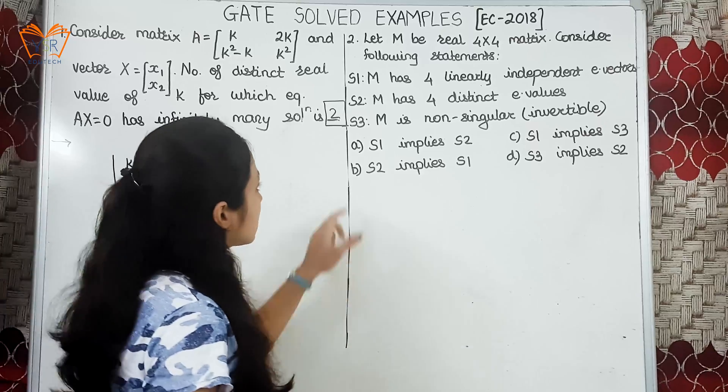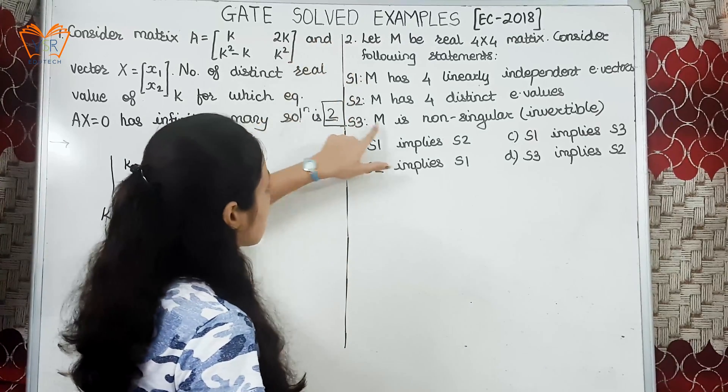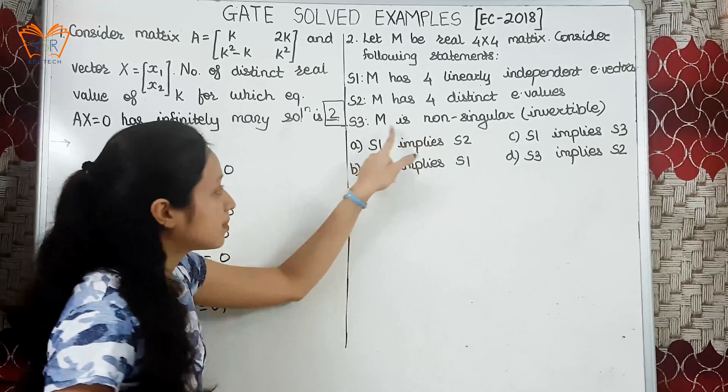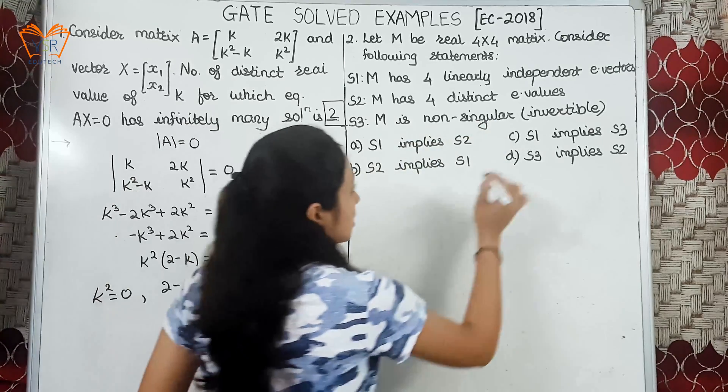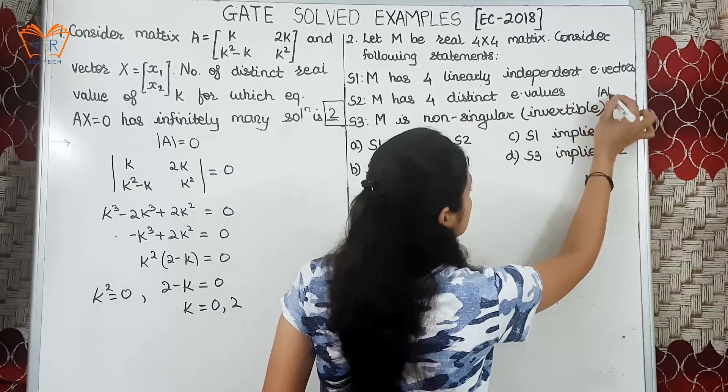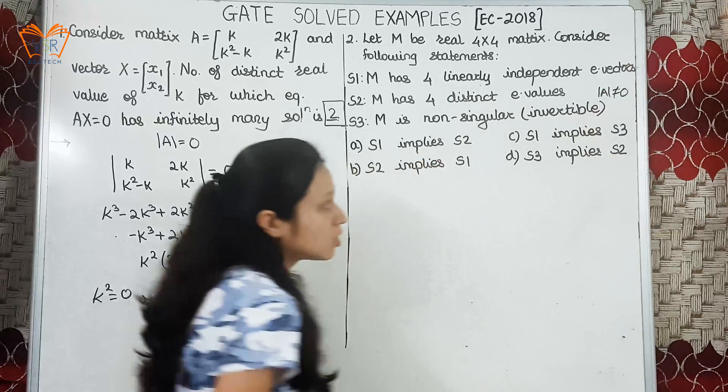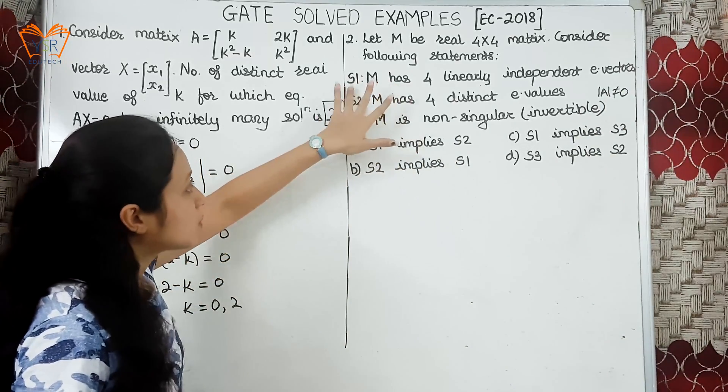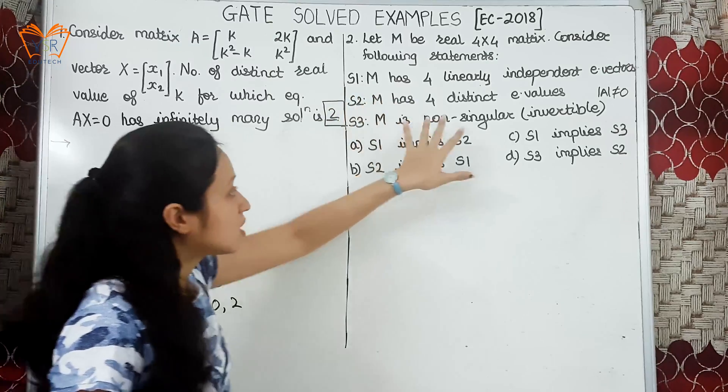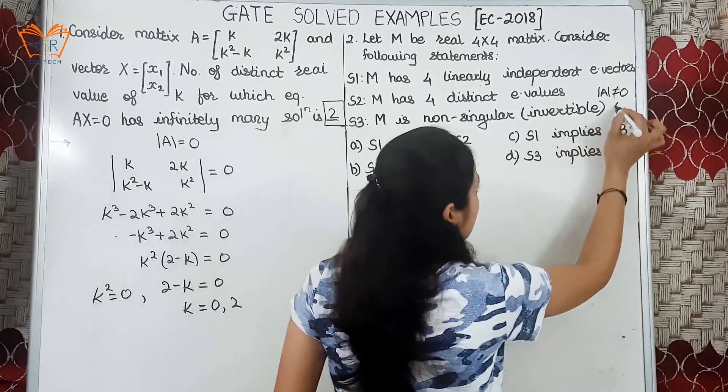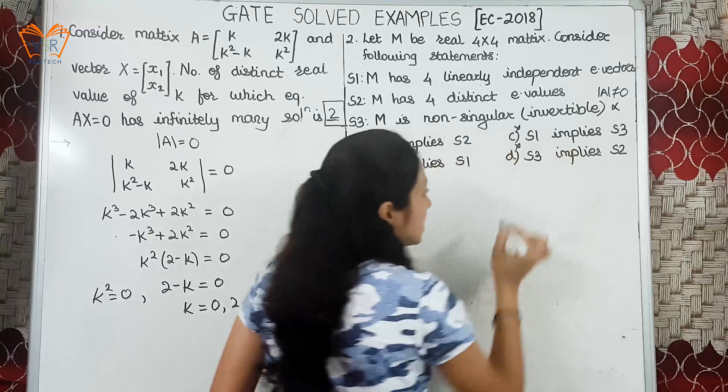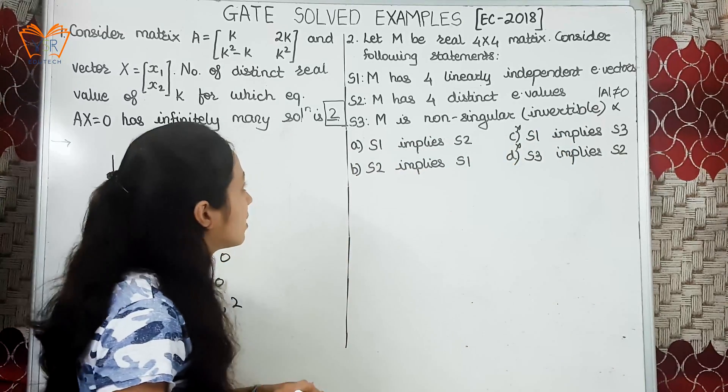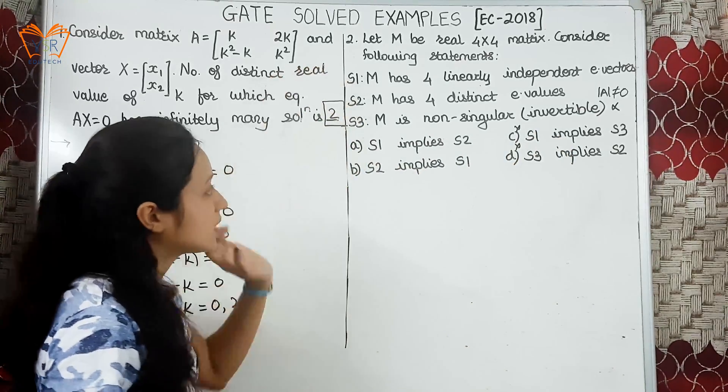Now, before we proceed, leave these two statements and focus on the third statement: M is non-singular. M is non-singular means determinant of that matrix is not equal to 0. If you see this statement S3 has no relation with S1 and S2. So this statement is invalid, that means the options C and D will be invalid.